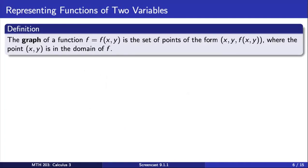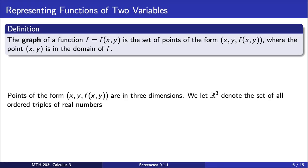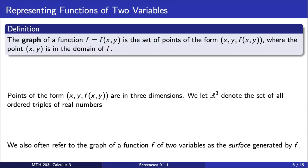We can also represent two variable functions using graphs. The graph of a function f is the set of all points that are ordered triples, where the first coordinate is the x value, the second coordinate is the y value, and the third coordinate is the value of the function at the ordered pair (x, y). Note that points on this graph have three coordinates, and therefore these graphs are in three dimensions. We let R³ denote the set of all ordered triples of real numbers. We also often refer to the graph of the function f of two variables as the surface generated by f.